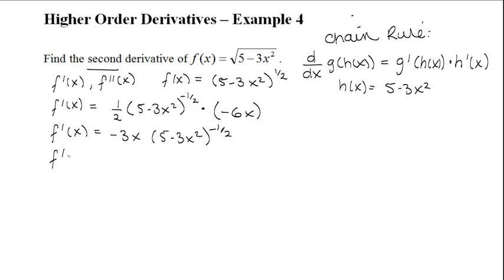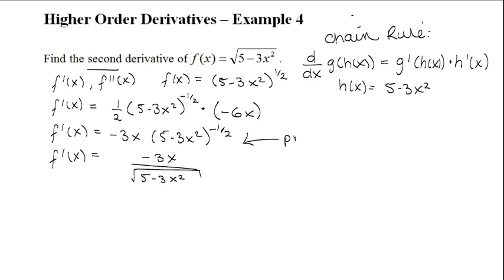If we rewrite f prime of x, you can see that we can either use product rule or quotient rule to find our second derivative. When rewritten, it's going to be negative 3x over the square root of 5 minus 3x squared. For this case, you can use product rule, or you could use quotient rule.